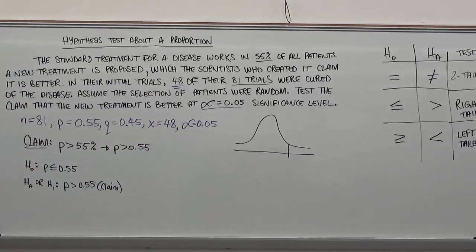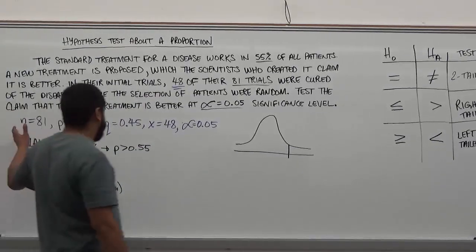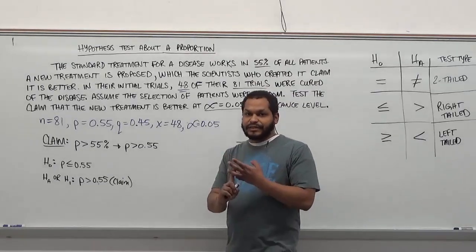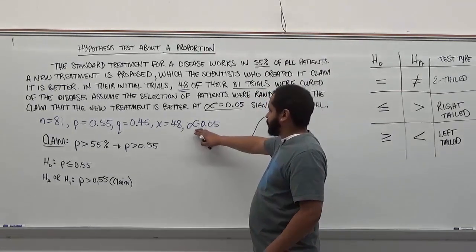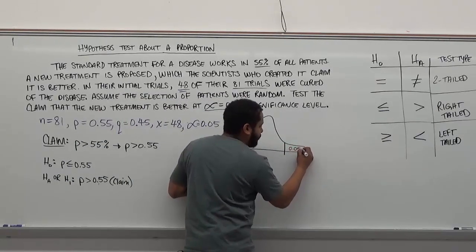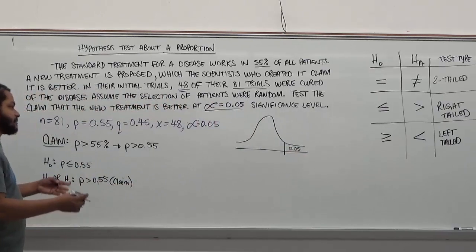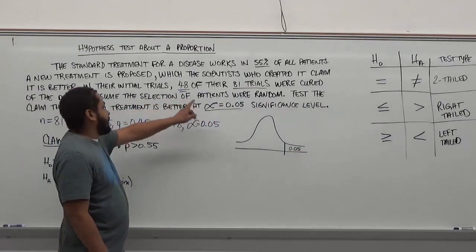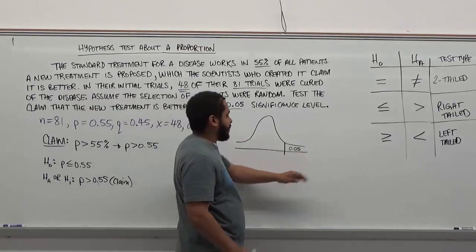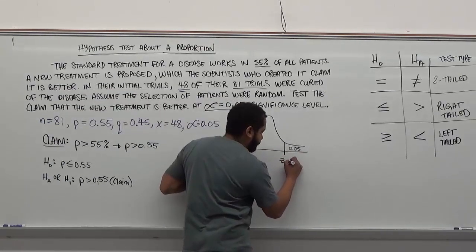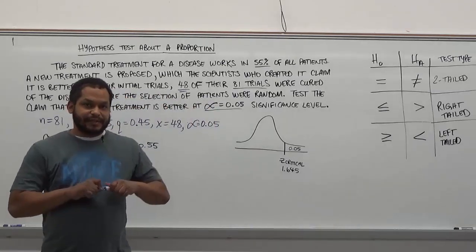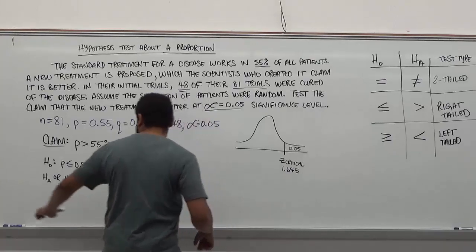Since n times p and n times q both passed, we can use a z-test statistic. The critical region has a tail area of 0.05, and looking on the z-chart, the corresponding z-critical value is 1.645. This value is usually given on your formula sheet. Everything to the right of 1.645 is the rejection region — if our test statistic falls there, we reject the null hypothesis.